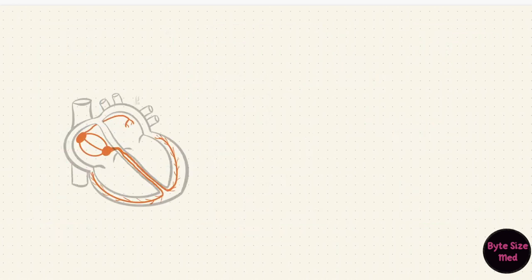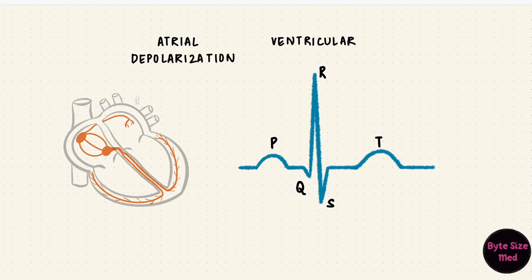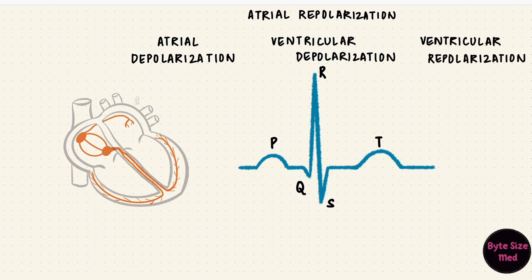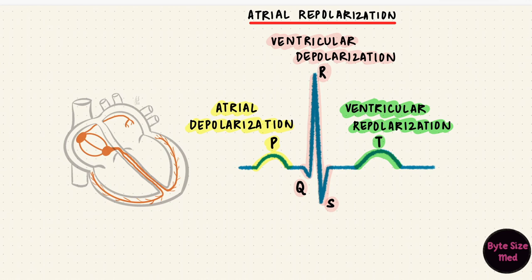The impulses that travel through the heart can be picked up from the body surface by electrocardiography, creating waves. There are five important waves: P, QRS, and T. The atria depolarize first, then the ventricles. After depolarization, these cells repolarize — so there is atrial repolarization and ventricular repolarization. Atrial depolarization produces the P wave; ventricular depolarization produces the QRS complex. Atrial repolarization has no visible wave because it gets buried in the QRS complex, occurring at the same time as ventricular depolarization. Ventricular repolarization is the T wave.